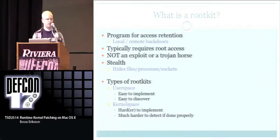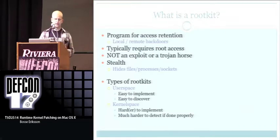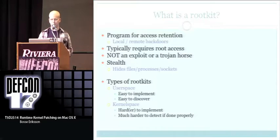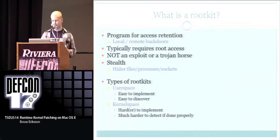The basic types of rootkits are user space rootkits and kernel space rootkits. User space rootkits are kind of easy to implement and therefore easy to detect. The kernel ones are a bit harder to implement and much harder to detect if done properly, since you are at the kernel level of the OS and can manipulate pretty much anything you want.